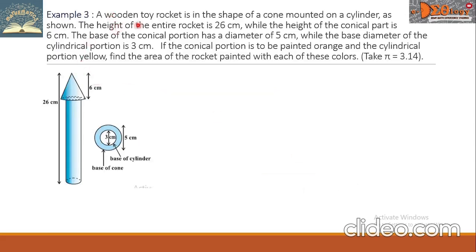Example 3. A wooden toy rocket is in the shape of a cone mounted on a cylinder. The height of the entire rocket is 26 cm while the height of the conical part is 6 cm. The base of the conical portion has a diameter of 5 cm while the base diameter of the cylindrical portion is 3 cm. Take pi equals 3.14.